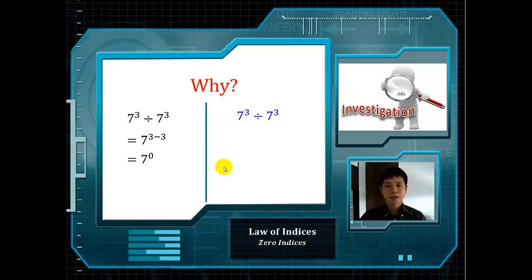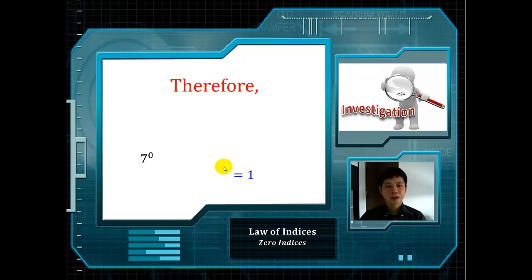Similarly, we can use direct calculation. 7 to the power of 3 divided by 7 to the power of 3 — we will cancel out all the common terms, and we have 1. Since the first two expressions are the same, therefore 7 to the power of 0 is equal to 1.